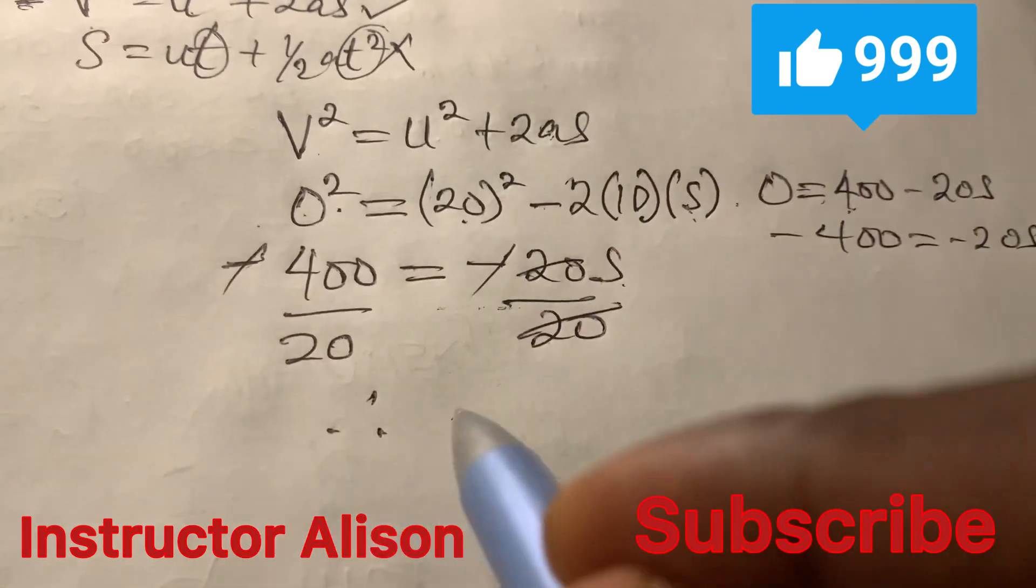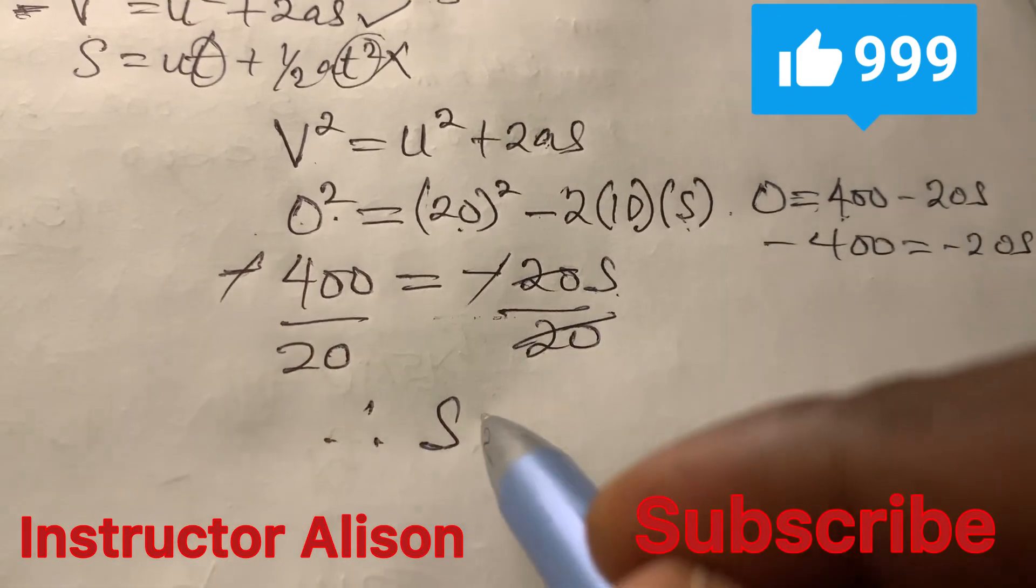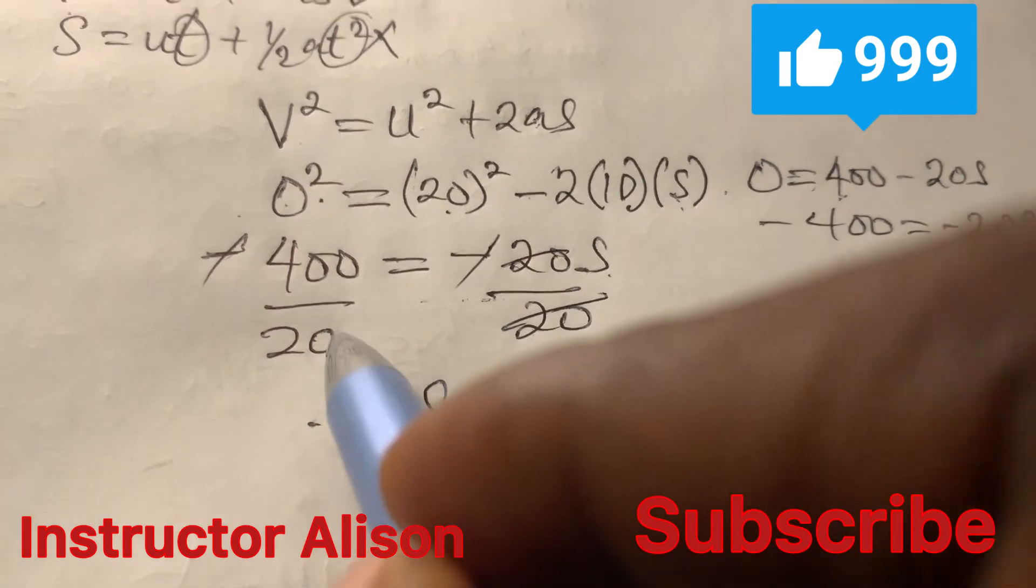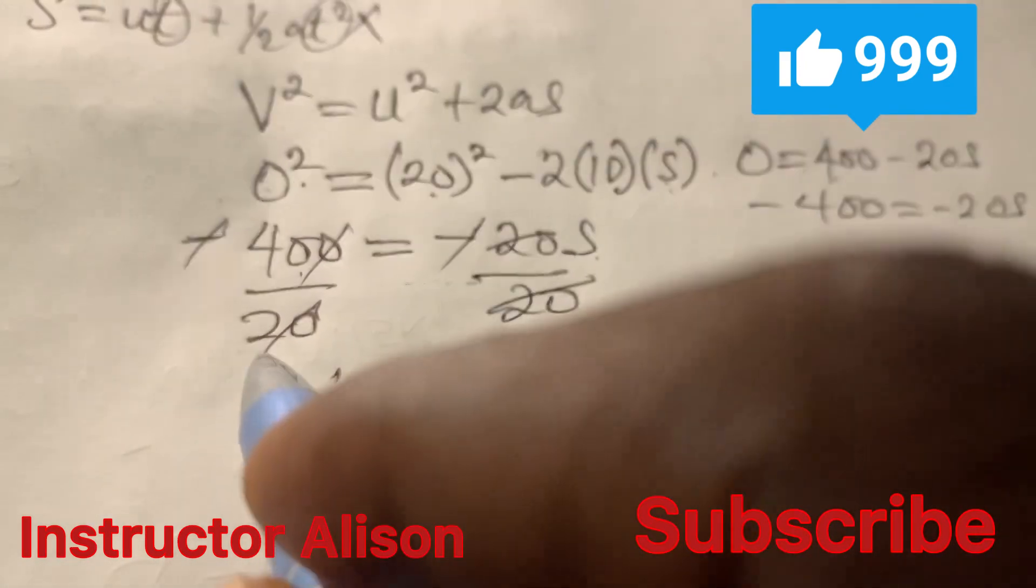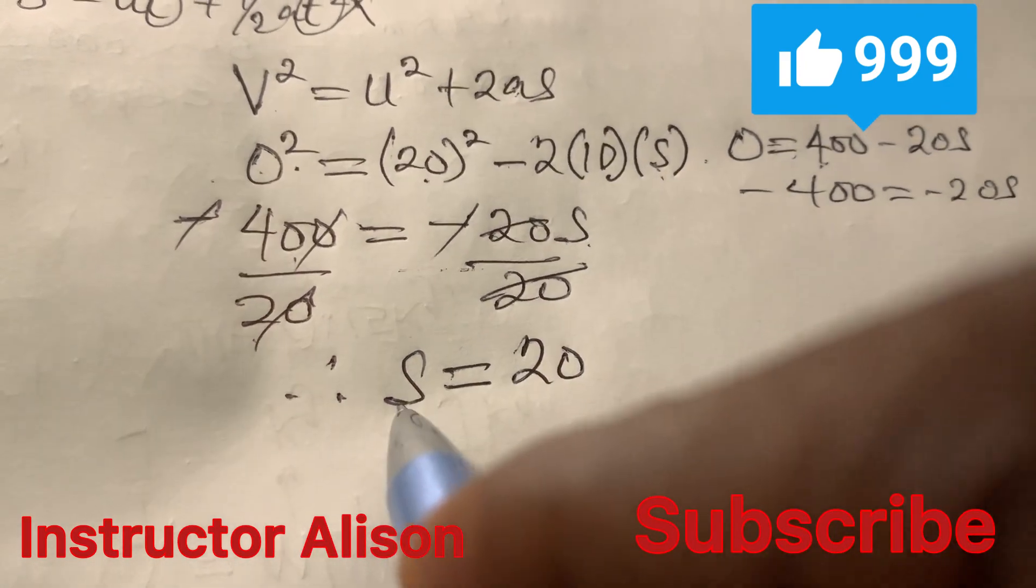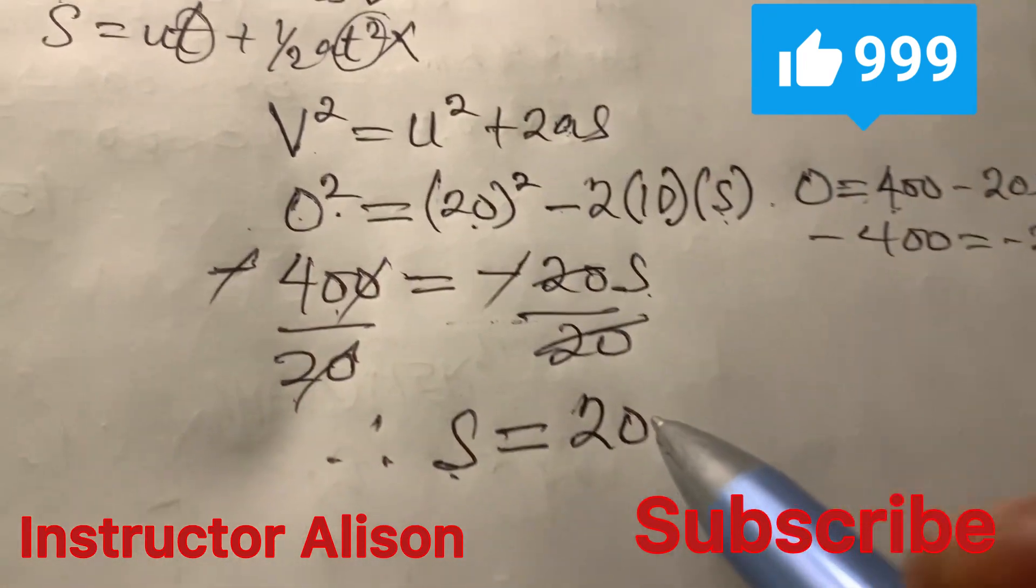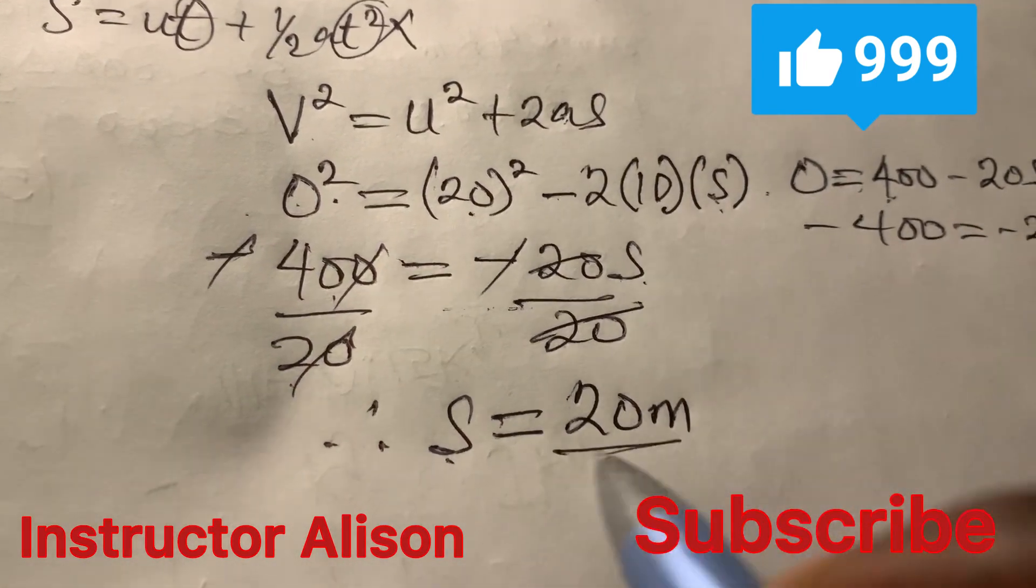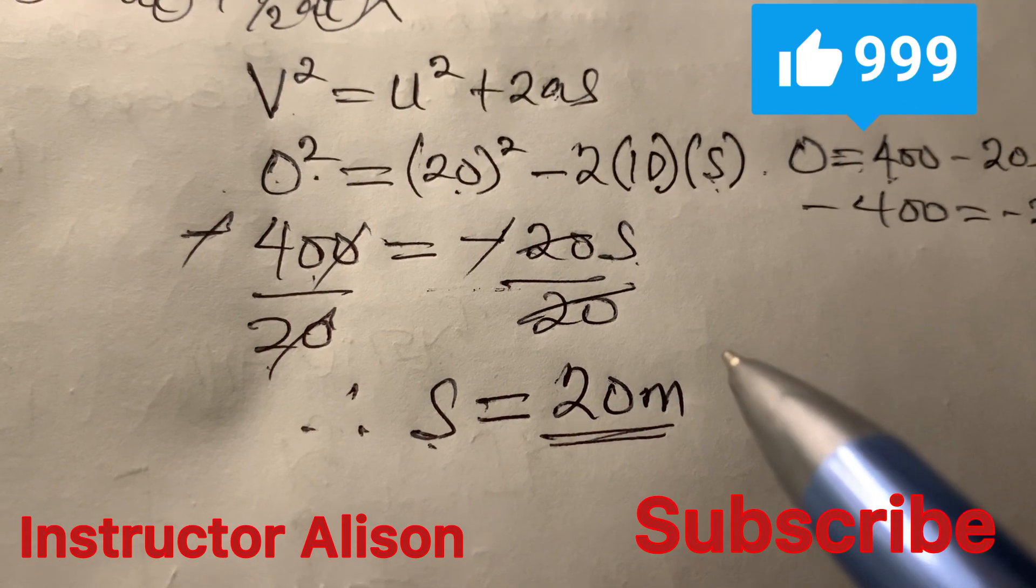Therefore you have your distance S to be equals, if this cancel out with this we will be left with 40 divide by 2 and that will give us 20. What is the unit for this distance? That is in meters. So the answer becomes 20 meters.